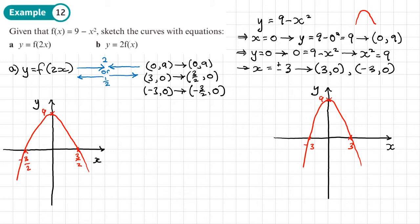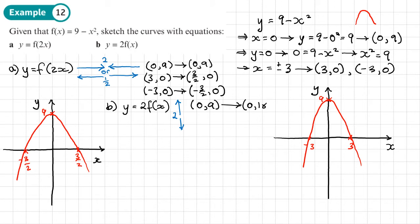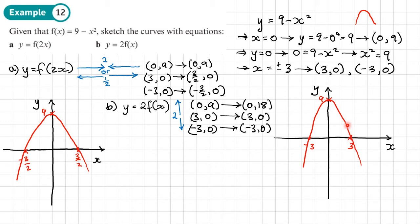Moving to part B, y equals 2f(x): the 2 is outside the brackets, so it stretches by a factor of 2 in the y direction. We multiply all y coordinates by 2. So (0, 9) becomes (0, 18), while (3, 0) stays as (3, 0) and (−3, 0) stays as (−3, 0). The graph will look the same shape but go twice as high.